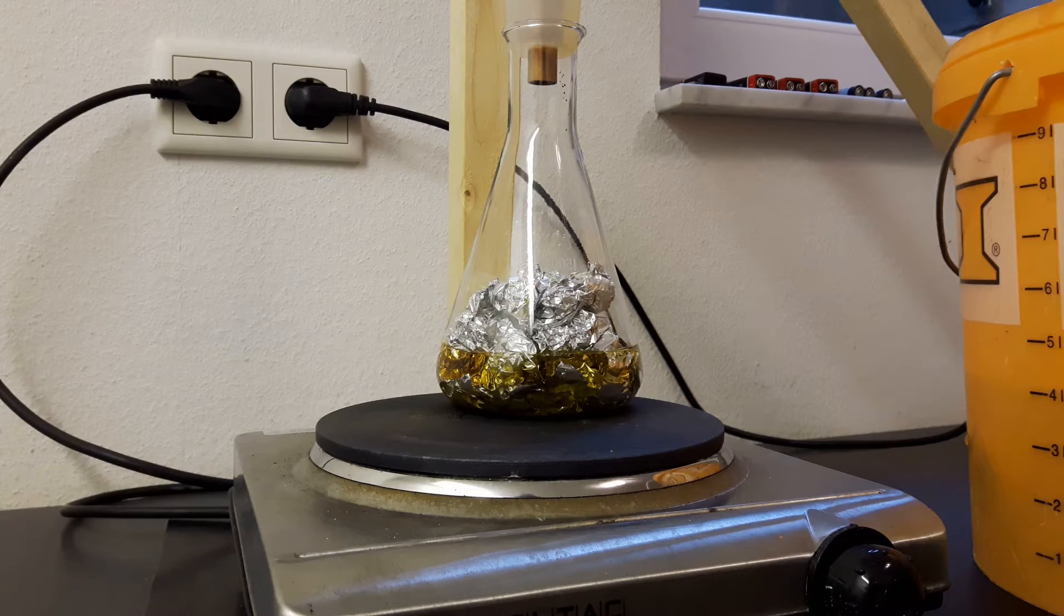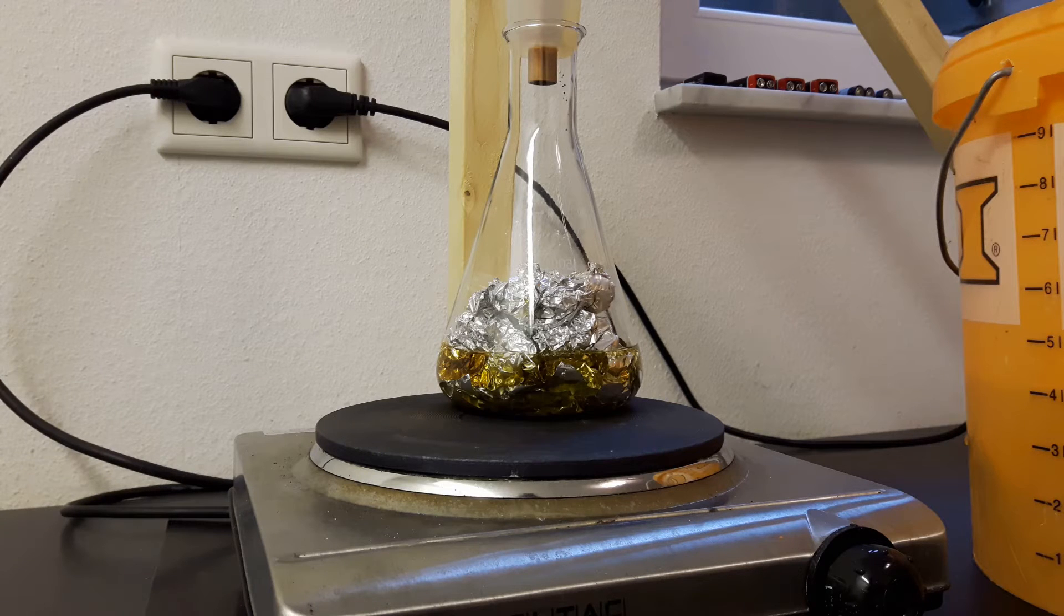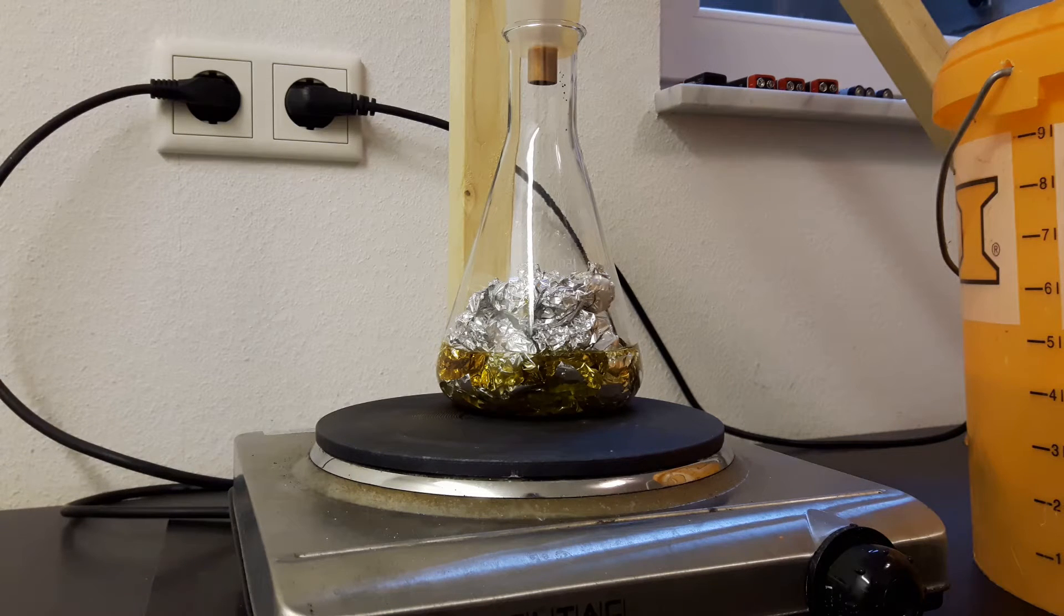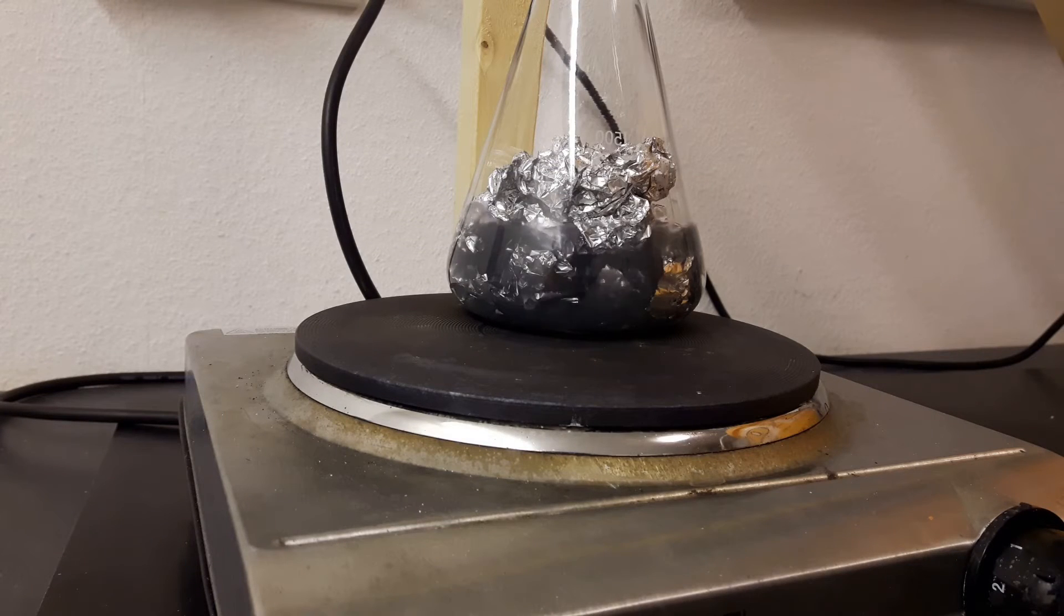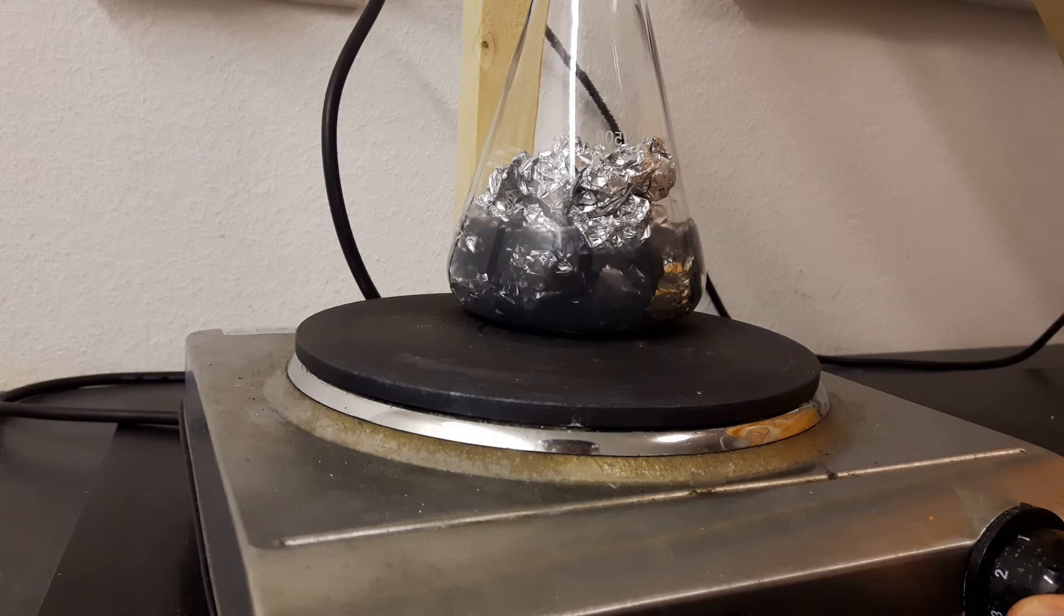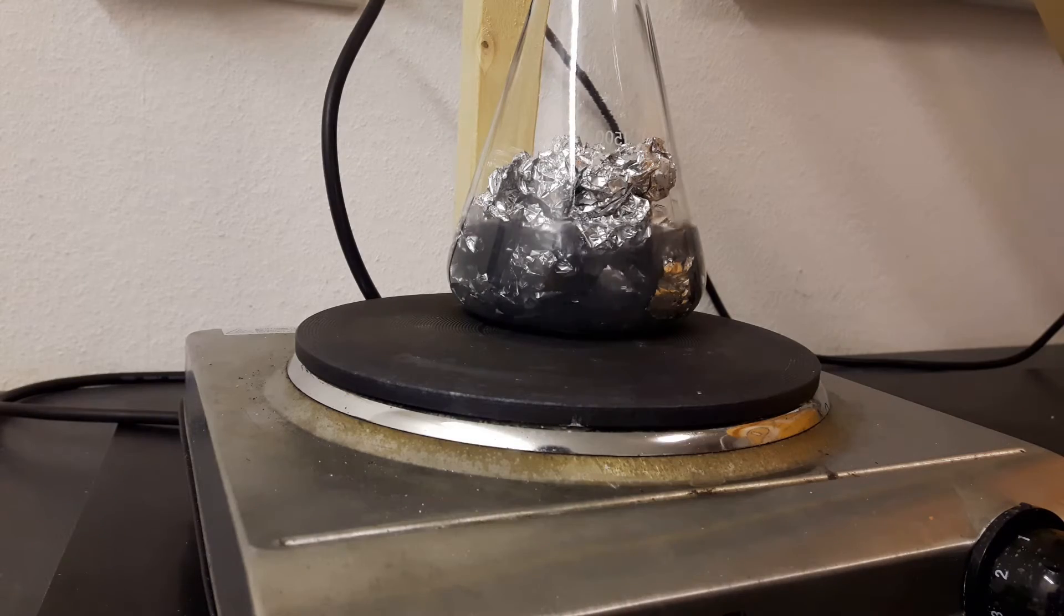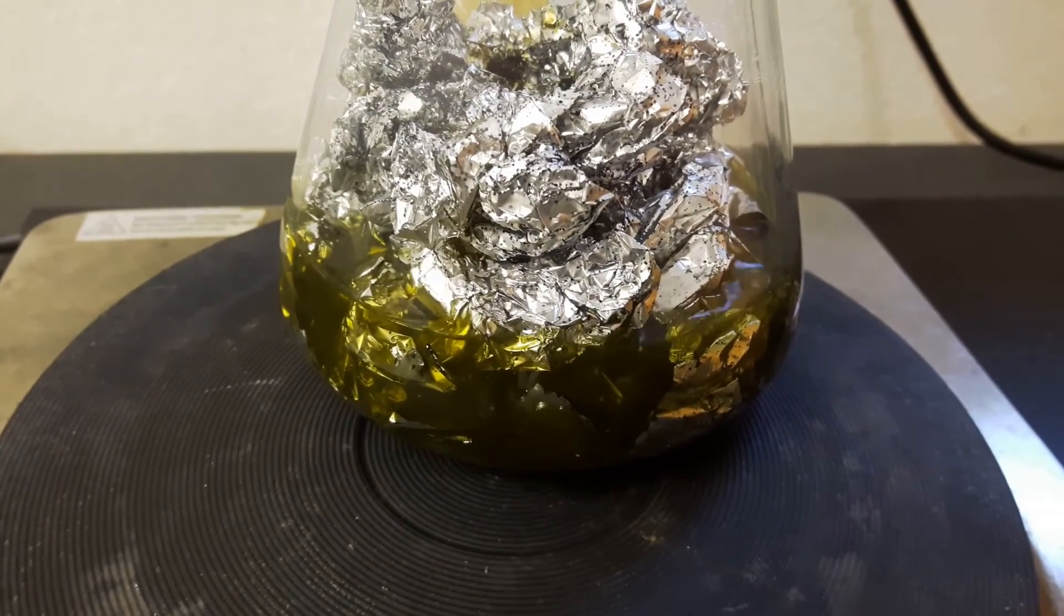So here you can actually see the Erlenmeyer flask that is placed on the hot plate. And the isopropanol was a bit orange due to iodine dissolved. But after a bit of boiling under reflux as you can see here it entirely vanished.